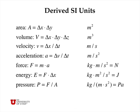In addition to the basic SI units, there are derived units. For example, area (delta x times delta y) is meters squared. Volume is cubic meters. Velocity, which is length divided by time, has units of meters per second. Acceleration is a change in velocity per unit time, so that would be meters per second squared.